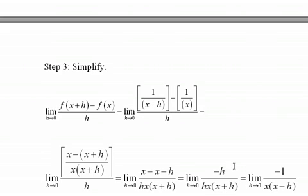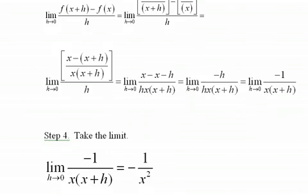And then finally I can cancel the h's, and end up with negative 1 on top and x times x plus h on the bottom. Now it's possible for me to take this limit, and that's what I do in step 4.